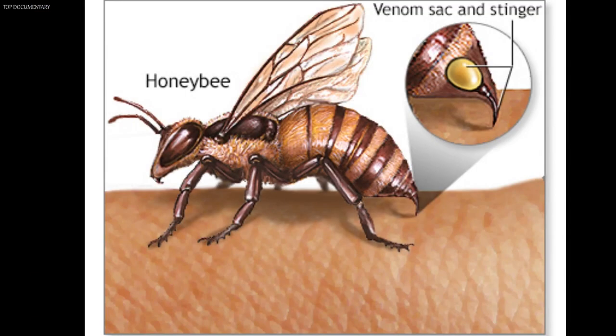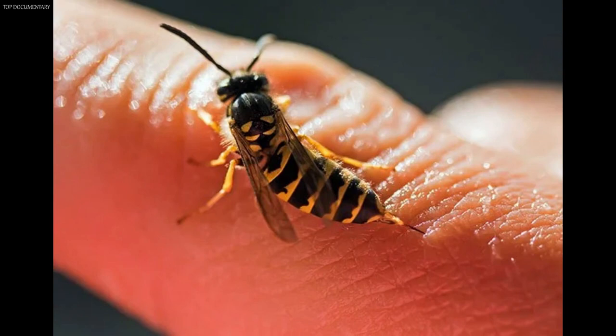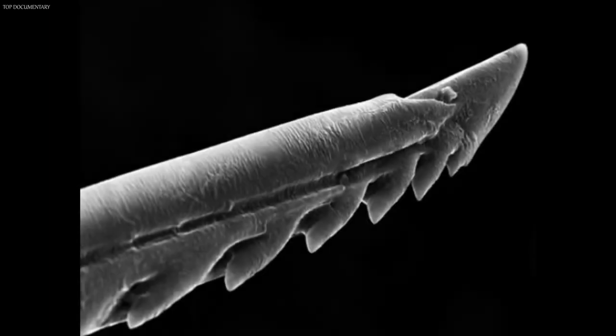Most bees depend on their stingers, or stings, as their only means of defending their home and their lives. Glands attached to the sting produce a venom made up of complex chemical substances. The sting of a worker bee is straight, with barbs on it. When the bee thrusts the sting into flesh, the barbs hold tight and the stinger pulls out of the bee's body. But muscles inside the sting keep working and force it deep into the wound, while muscles pump more poison down the sting. A worker bee dies soon after losing its sting. The queen bee has a smooth, curved sting that she uses only to kill other queens, and queens do not lose their stings as do workers. Drones have no stings.